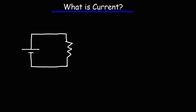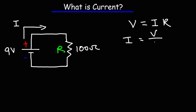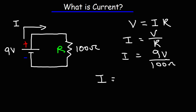What is electric current? Let's say we have a 100 ohm resistor connected across a 9 volt battery. What is the current flowing in the circuit? Conventional current flows from the positive terminal of the battery towards the negative terminal; electron flow is in the opposite direction. Based on Ohm's law, which states that voltage equals current times resistance, the current is the voltage divided by the resistance: 9 volts divided by 100 ohms.